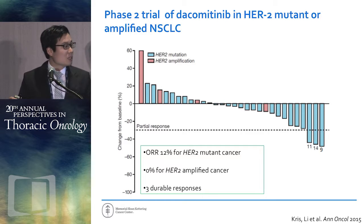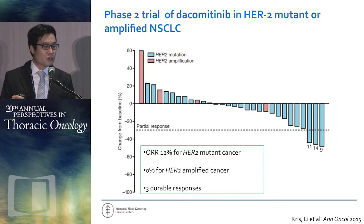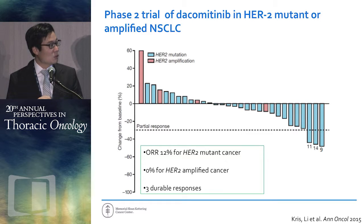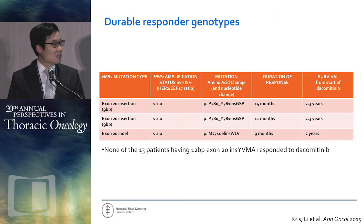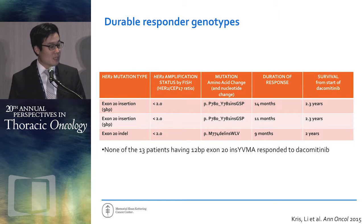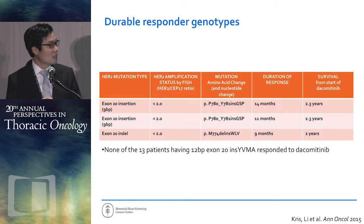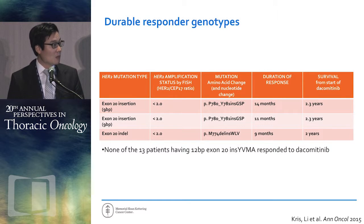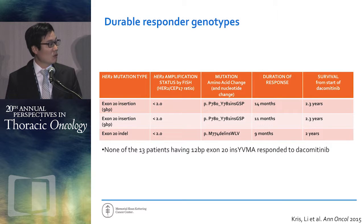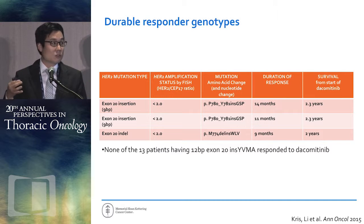Marc Sequist published the experience with dacomitinib in a phase 2 trial for HER2 mutant and amplified patients — largely HER2 mutant patients in blue, a few amplified in red. The overall response rate in the mutant population was 12%, with modest activity and none in the amplified group. There were three durable responses. Interestingly, none of the YVMA mutations responded. The responders were actually 9-base pair insertion patients and a WLV insertion deletion. There's heterogeneity in the underlying genotypes, but these responders are real — quite significant tumor shrinkage with a long duration of response.